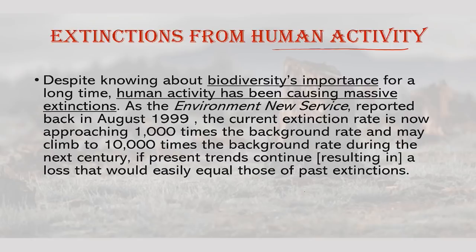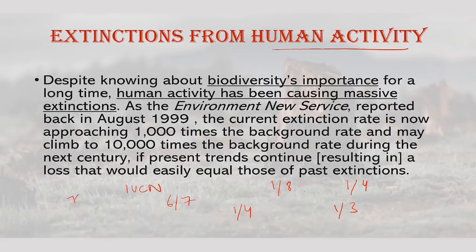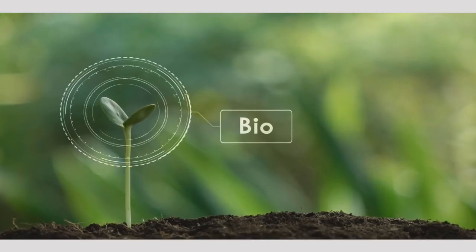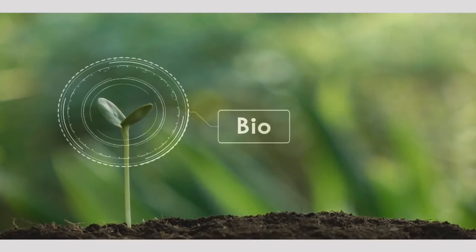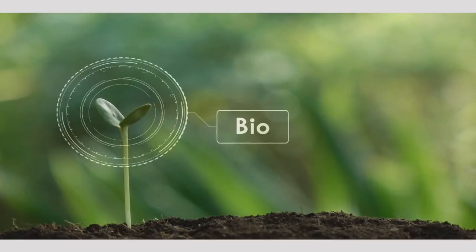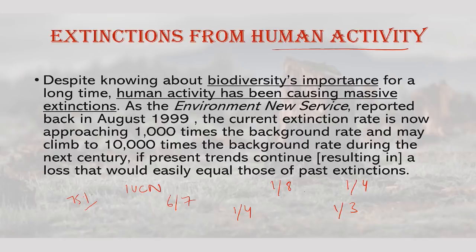The IUCN notes that many species are threatened with extinction. Among those at threat of extinction: 1 out of 8 birds, 1 out of 4 mammals, 1 out of 4 conifers, 1 out of 3 amphibians, 6 out of 7 marine turtles. Furthermore, 75% of genetic diversity of agricultural crops has been lost, 75% of world's fisheries are fully or over-exploited, and up to 70% of world's known species risk extinction if global temperatures rise by more than 3.5°C.